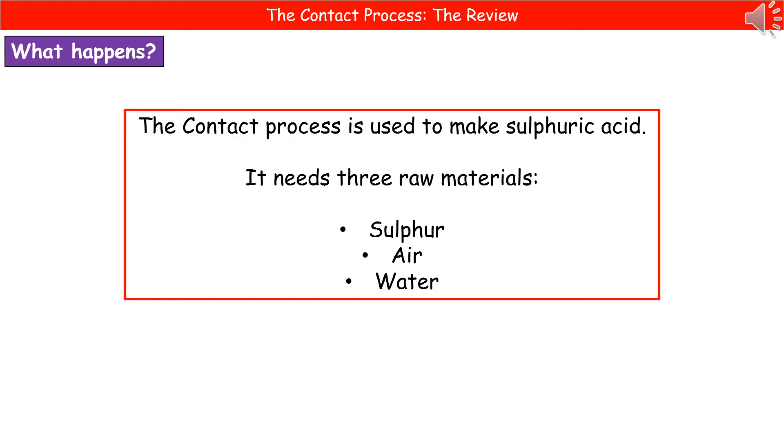Welcome to our review on the contact process. When we're talking about the contact process, we're talking about one that's used to make sulfuric acid. Sulfuric acid is a very important chemical because we use it in a huge range of other processes once we've made the acid itself.